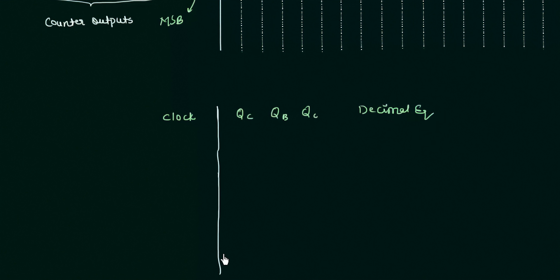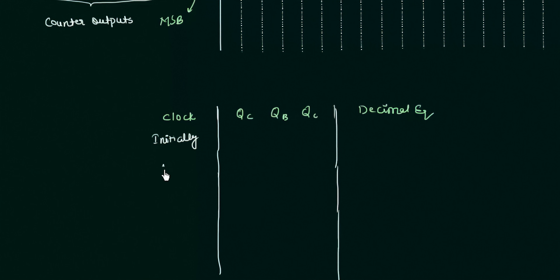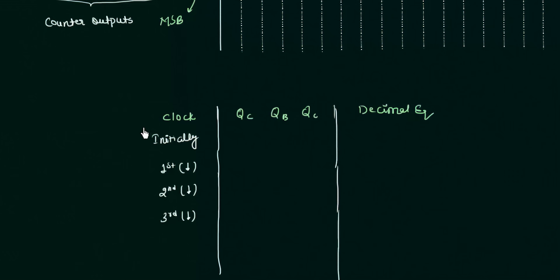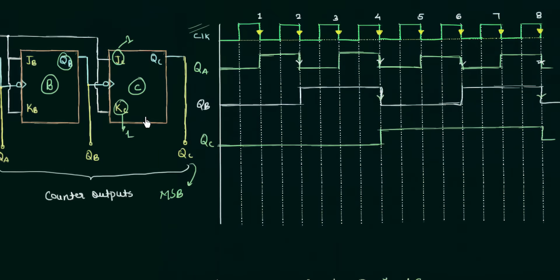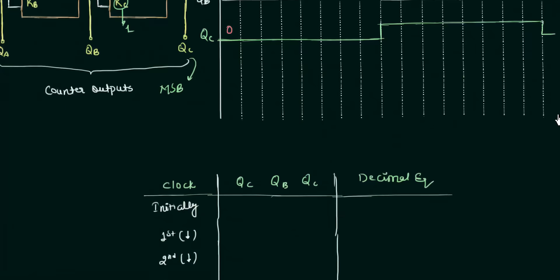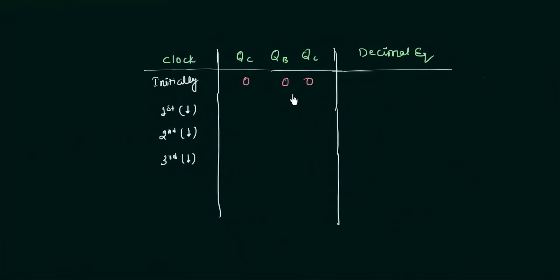We will consider the initial condition and then analyze the first, second, and third falling edges, then move on to the fourth through eighth. Initially QA = 0, QB = 0, QC = 0, so I write 000 and the decimal equivalent is 0. For the first falling edge, QA = 1, QB = 0, QC = 0, giving 001 which is decimal 1.